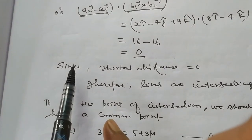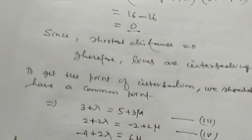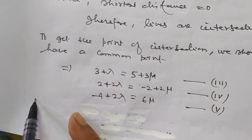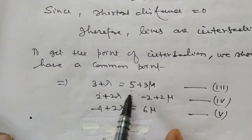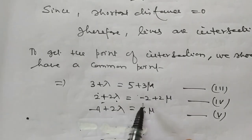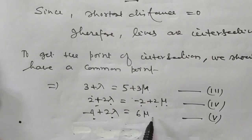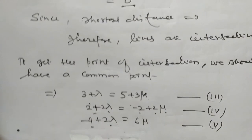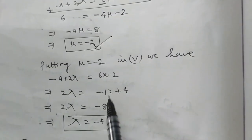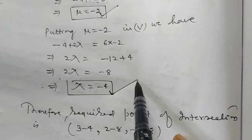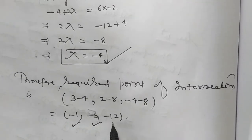Since the lines are intersecting, we find the point. Setting coordinates equal: 3 + lambda = 5 + 3mu, 2 + 2lambda = -2 + 2mu, -4 + 2lambda = 6mu. After solving equations 4 and 5, mu = -2. Putting mu = -2 gives lambda = -4. Therefore, the required point of intersection is (-1, -6, -2).